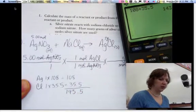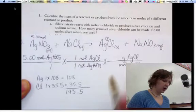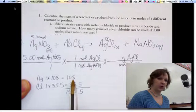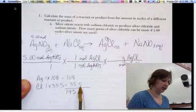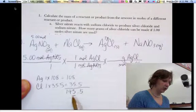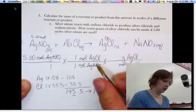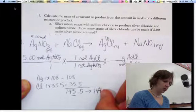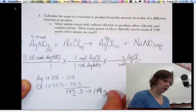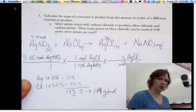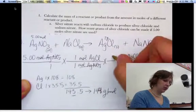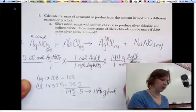And our sig fig rules say that when you're adding and subtracting, you round to the least number of decimal places. Well, this is a whole number. This is the tenths place, so I have to round to a whole number. So I'm going to round that to 144. 144 grams per mole. So up here in my molar mass, it's 144 grams for every one mole of silver chloride.